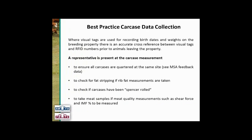In terms of collecting data: abattoirs run on NLIS tag RFIDs, and all their reports run off those RFID numbers correlated with a kill number. It's very unusual that they will read visual ear tags. If you've been using visual ear tags to record birthdates and weights on the breeding property, it's really important to cross-reference the visual tag with the RFID before the animals leave the property. It can be done at the abattoir knocking box, but I'd recommend doing it before animals leave the property.